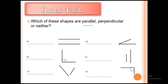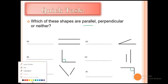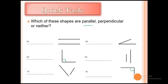We have three choices: parallel, perpendicular, or neither. 'Neither' means it's not parallel and it's not perpendicular — it doesn't fit either category. For question A, we have two straight lines that never meet. When two lines never meet, that means parallel.